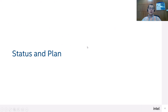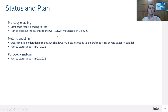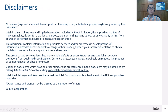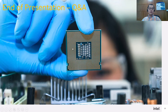In this section, I'm going to introduce our current status and future plan. For pre-copy enabling, the draft code is ready and pending testing. We plan to post all patches to the QEMU and KVM mailing lists in Q1 next year. For multi-FD enabling, we plan to support it in Q1 next year after posting the basic pre-copy enabling. For post-copy enabling, we plan to support it roughly by Q2 next year. That's all for this presentation — thank you. Questions and comments are welcome.